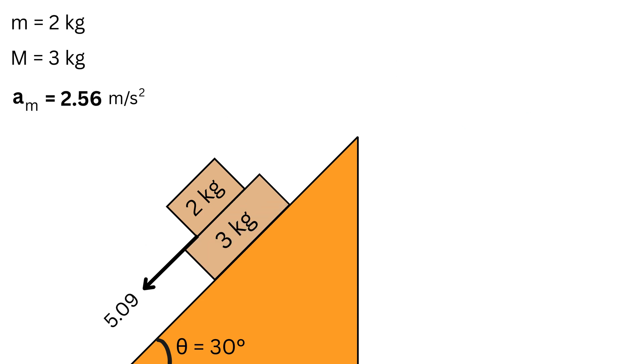Now let us calculate the acceleration of the bottom block. Listen carefully. When the top block slides relative to the bottom block, kinetic friction at the interface comes into play. By Newton's third law, the friction that acts down the slope on the top block acts equally and in the opposite direction or up the slope on the bottom block. This friction is the only force trying to pull the bottom block up as there is no external force directly applied to it.